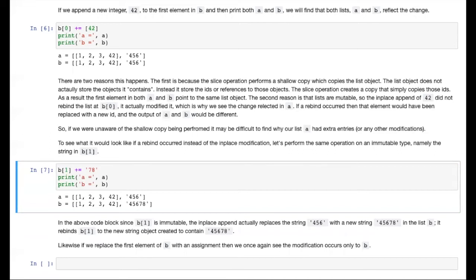Because strings are immutable, the plus equals operator cannot modify the string in place. Instead, a new string is created that contains all the elements 456 and 78. And then that new string is bound to B[1], thus replacing the previous reference in the string. And so A and B no longer point to the same string object in the second position.